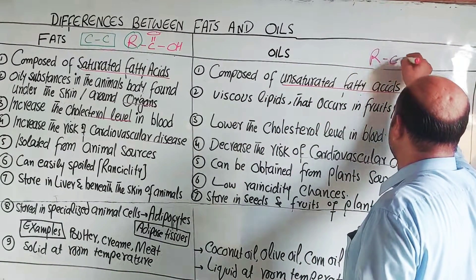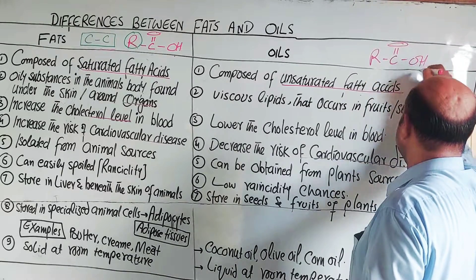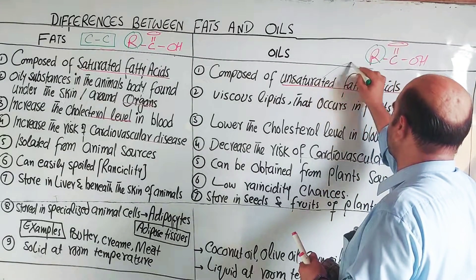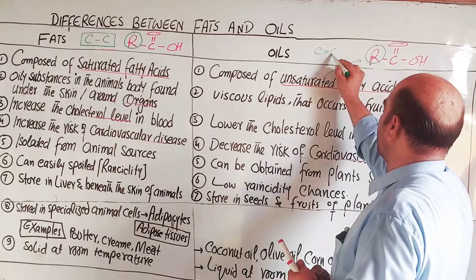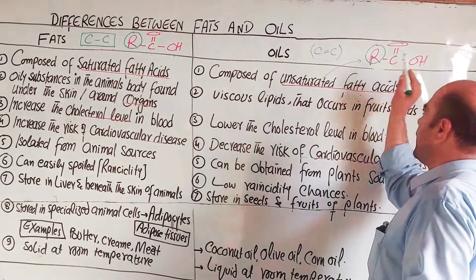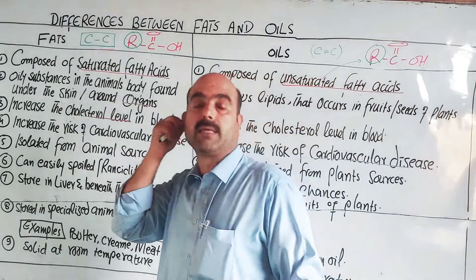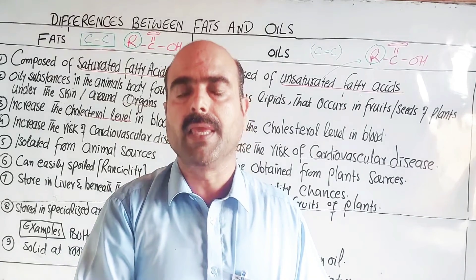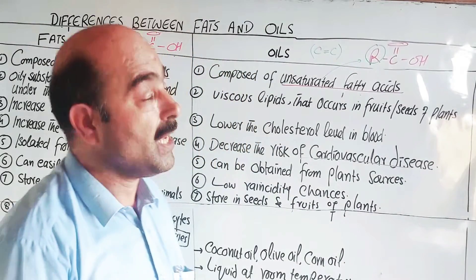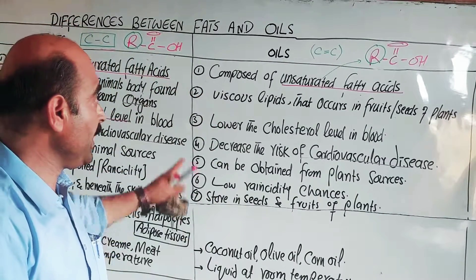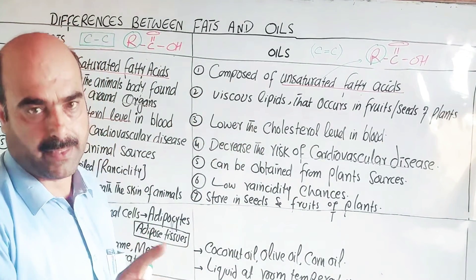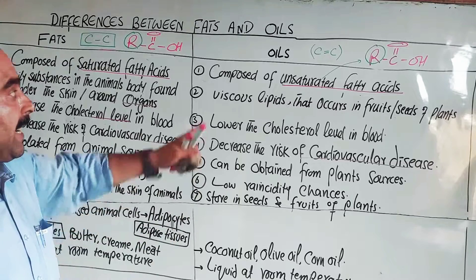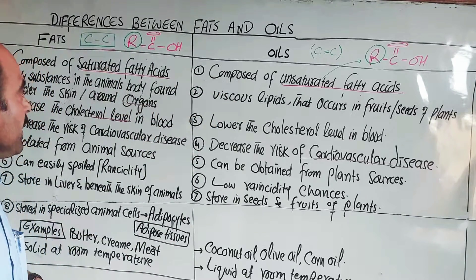The unsaturation in oils is the main difference between oils and fats, and this is the main reason why oils are liquid at room temperature and fats are solid at room temperature — it comes down to saturation versus unsaturation.